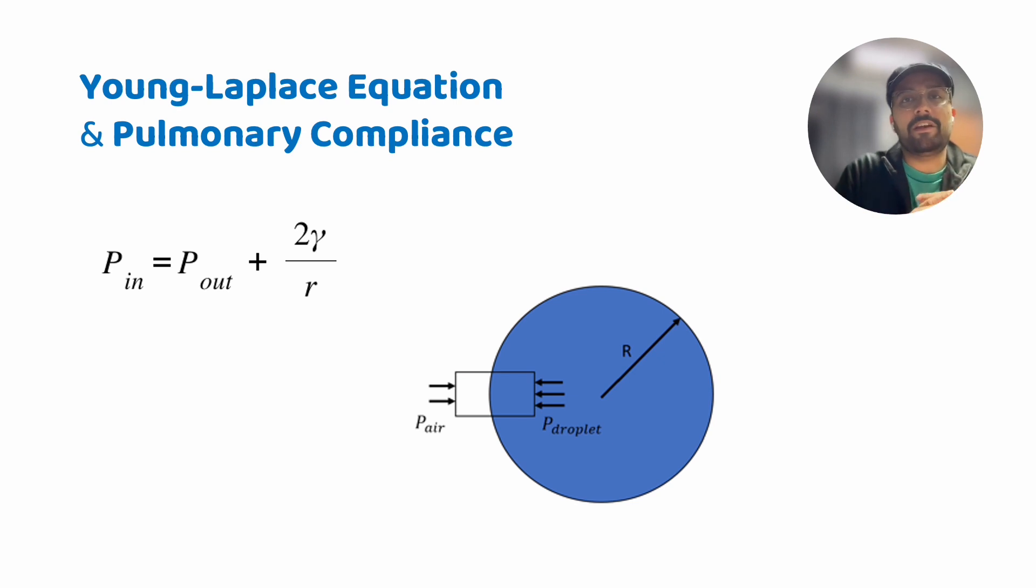In that case, the pressure of gas should be greater than 2 gamma by R otherwise the alveolar membrane will collapse upon itself resulting in atelectasis or collapse of alveoli.